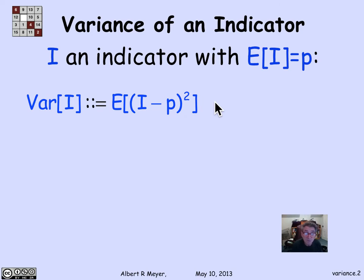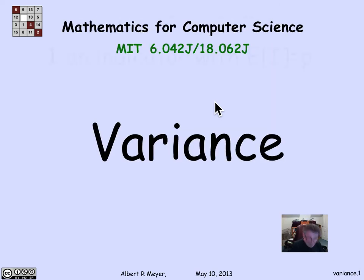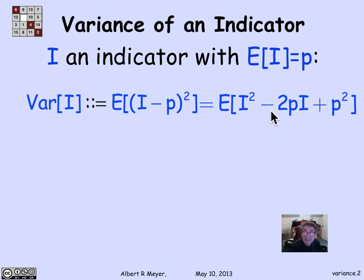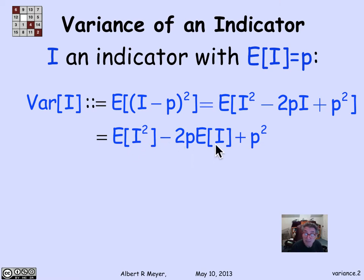This is one of these almost mechanical proofs that follows simply by algebra and linearity of expectation. Let's walk through it step by step. I'd recommend against trying to memorize this — I just reprove it every time I need it. Step one: expand (i minus p) squared algebraically, giving the expectation of i squared minus 2pi plus p squared. Applying linearity of expectation, I get the expectation of i squared, minus 2p times the expectation of i, plus p squared. The expectation of a constant p squared is just p squared.